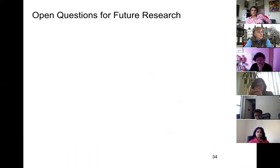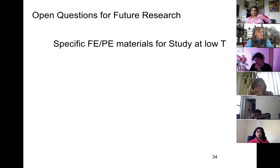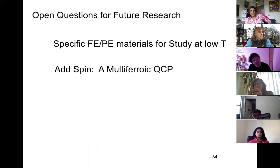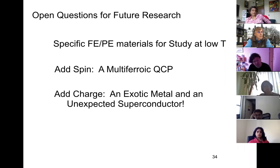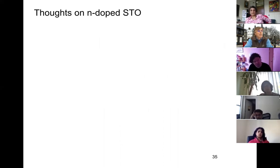Why study quantum criticality in polar materials? Quest for universality, simple examples with few degrees of freedom and non-dissipative dynamics, residing in the marginal dimension allowing for detailed interplay between experiment and theory, and additional degrees of freedom — spin and charge — that can be added systematically. Some open questions for future research: there are specific materials for study at low T; adding spin gives a multiferroic quantum critical point; my colleague Sang Chang already has one of these, and a number are predicted by Nicola Spaldin. Then you can add charge — and I'd like to end today by telling you about an unexpected exotic metal and superconductor.